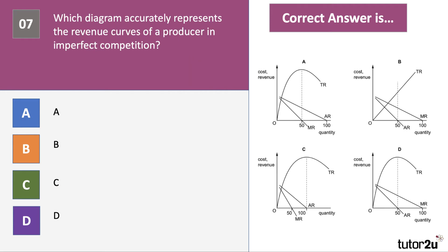Question seven: which diagram accurately represents the revenue curves of a producer in imperfect competition, such as a monopoly or monopolistic competition? The correct answer is A. You maximize revenue where marginal revenue cuts the x-axis. Answer D is inaccurate — they've put the marginal and the average revenue curves the wrong way around. So the answer is A.